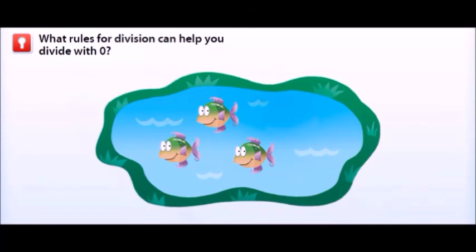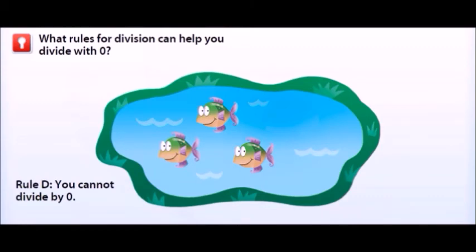Now let's say you have 0 bowls and 3 fish. If you have 0 bowls, then you can't separate the fish into bowls. This is another division rule: you cannot divide by 0.